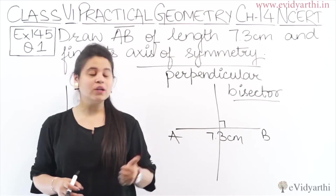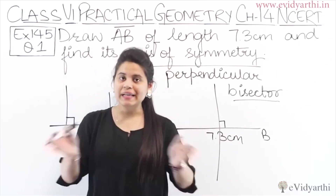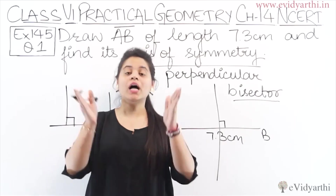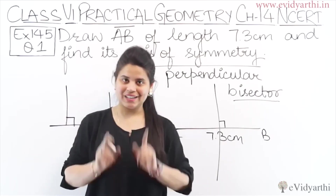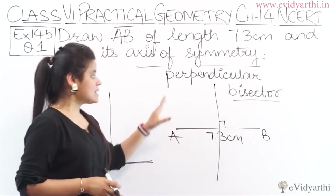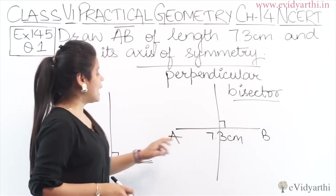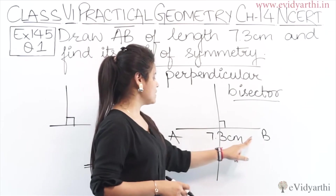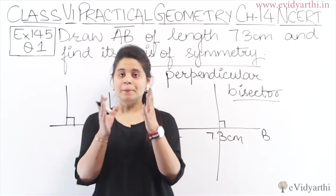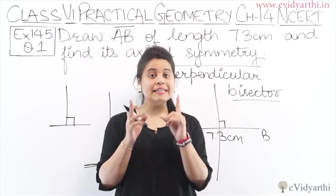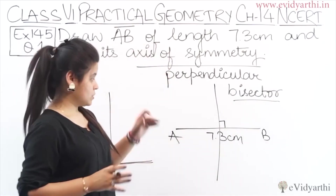It makes a 90 degree angle, and the line is perpendicular to the segment — that is, perpendicular bisector creates a right angle at the midpoint of the line segment. We will construct a perpendicular bisector with the help of a ruler and compass.